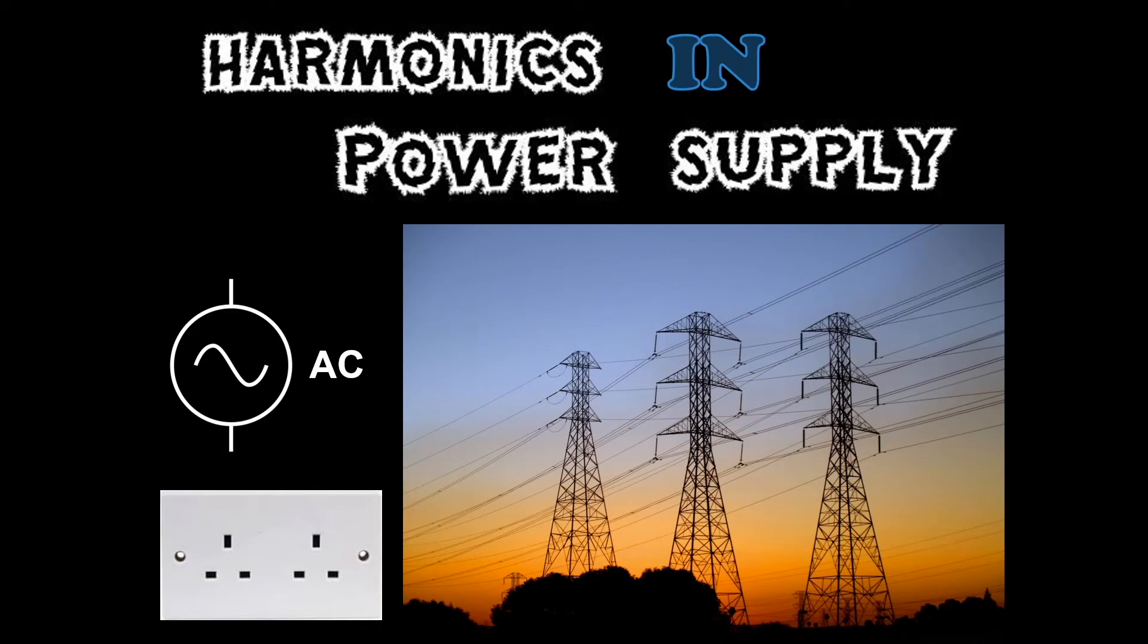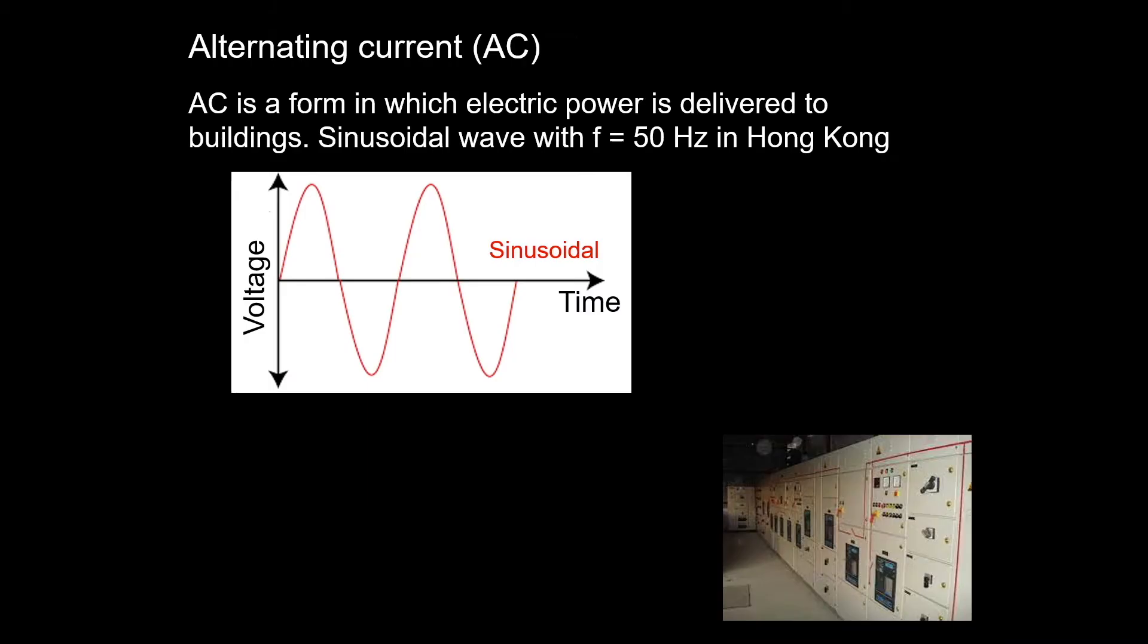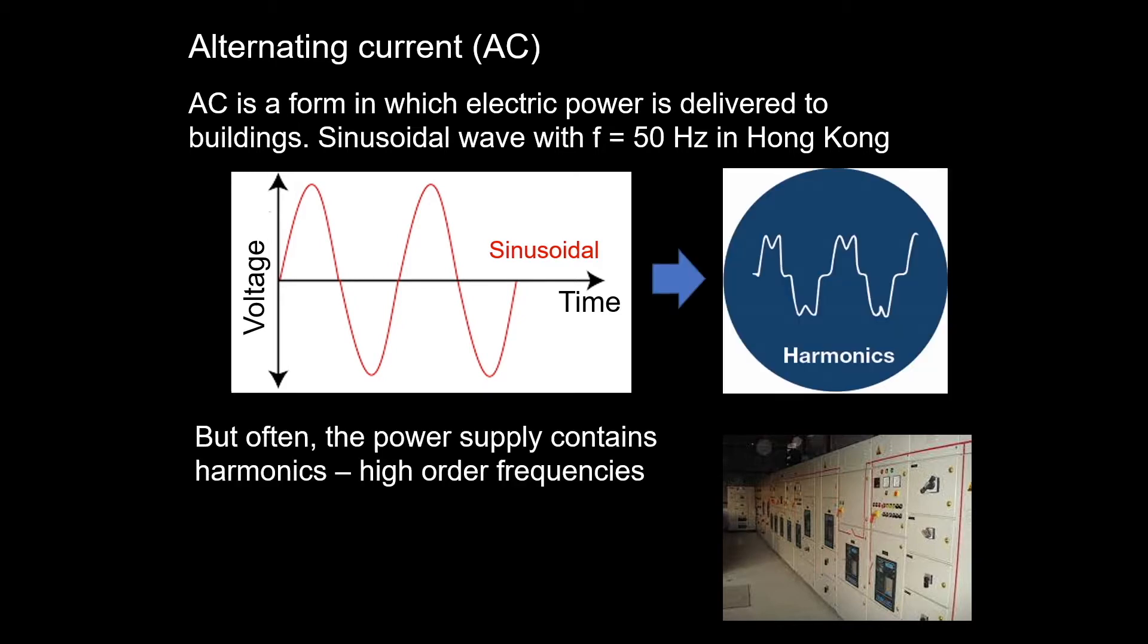Today we'll try to understand harmonics in power supply. Most of you probably know that electric power for buildings is in the form of alternating current, meaning the signal is sinusoidal. The frequency in Hong Kong is 50 Hertz, but very often the power supply contains harmonics, which are higher order frequencies. Here let us explore how these harmonics can be made or removed.